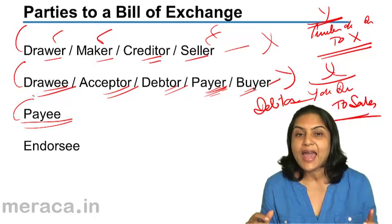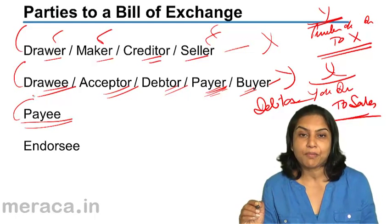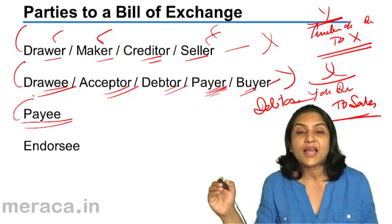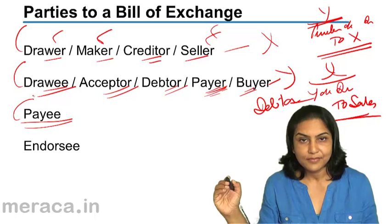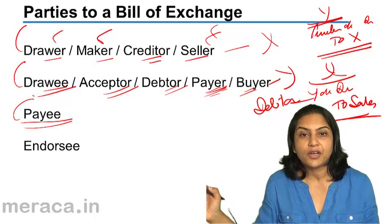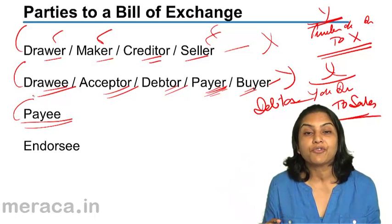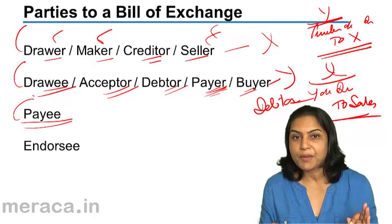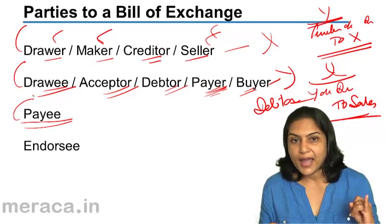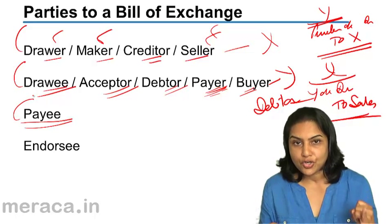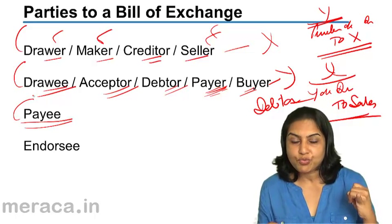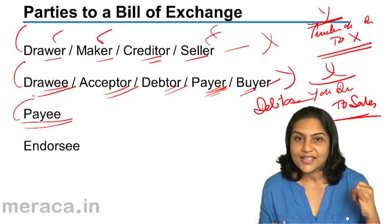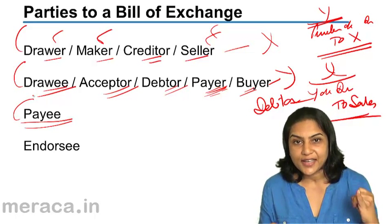One is the maker, the drawer. Two is the drawee or the acceptor — the person on whom the bill is drawn — who is the payer. And the payee, the person who will receive the payment, may be a third person. On the bill, X might say: 'three months from now, pay Z or order the amount of rupees 20,000.' In that case we have three people: X the maker/drawer, who was the person who sold the goods, the seller, the creditor.